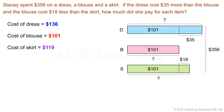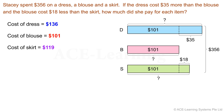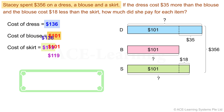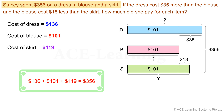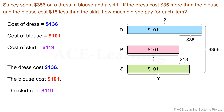Have we solved the problem? Are our answers correct? We need one last step to find out. Step 4: Check back. Verify the results by substitution. The costs of the dress and the skirt are in reference to the cost of the blouse, which we found to be $101. Adding all three items: $136 plus $101 plus $119 equals $356. This is correct. The dress cost $136, the blouse cost $101, and the skirt cost $119.